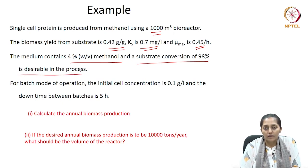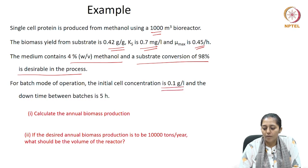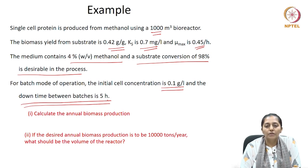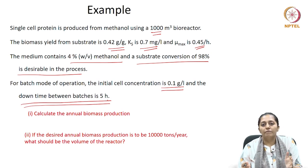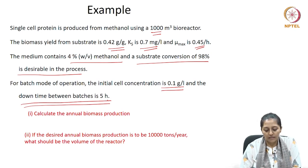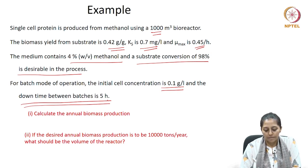A substrate conversion of 0.98 is desirable — meaning 98 percent of the substrate should get consumed by the end of the batch process. For batch mode of operation, the initial cell concentration is 0.1 grams per liter. The down time between two successive batches is set to be 5 hours, which covers harvesting, re-preparing, sterilizing, and cleaning the reactor for the next run.